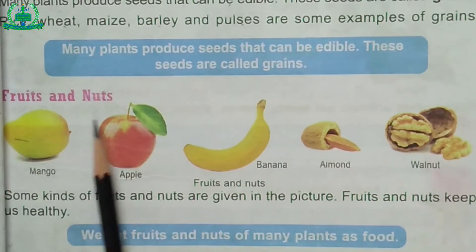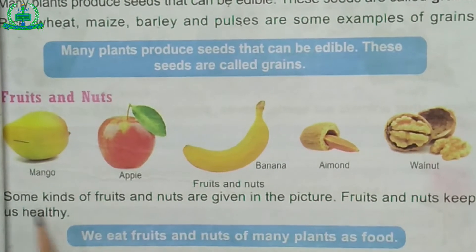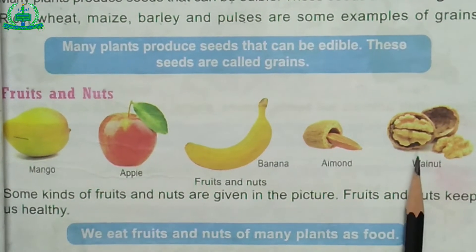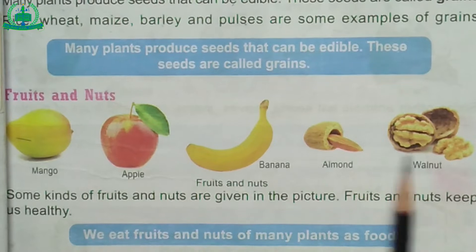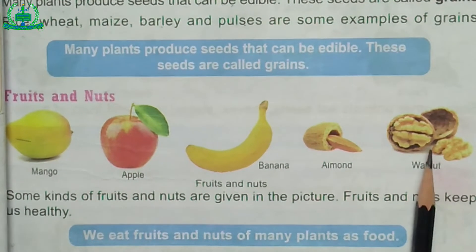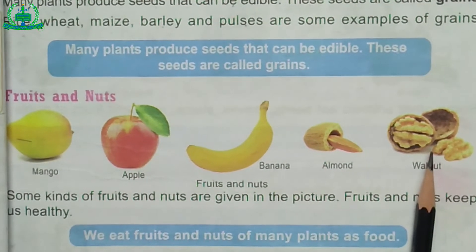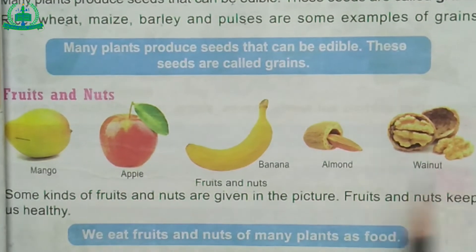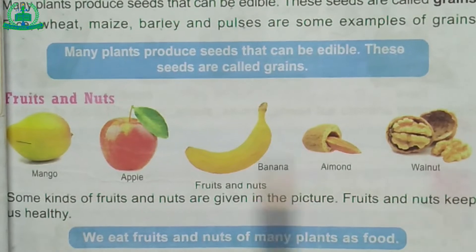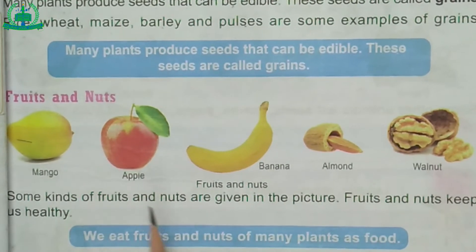Fruits and nuts: Some kinds of fruits and nuts are shown in the picture. Fruits and nuts keep us healthy. We eat fruits and nuts of many plants as food.